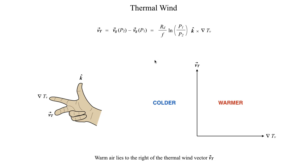Warm air lies to the right of the thermal wind vector V_T. That's going to do it for the derivation of the thermal wind vector, and in the next segment we're going to take a look at some more of the physical consequences that arise from this idea of thermal wind. I will see you all in the next segment.